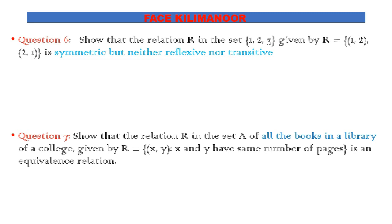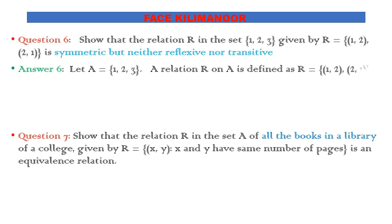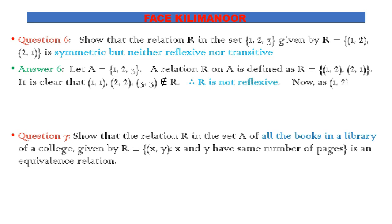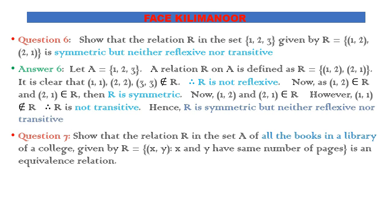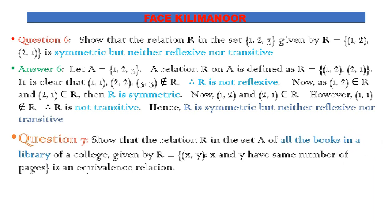Question 6: Show that the relation R in the set {1,2,3} given by R = {(1,2),(2,1)} is symmetric but neither reflexive nor transitive. Let A = {1,2,3}. The relation R = {(1,2),(2,1)}. Since (1,1) is not in R, the relation is not reflexive. Since (1,2) and (2,1) both exist, R is symmetric. Since (1,2) and (2,1) exist but (1,1) is not in R, R is not transitive. Hence R is symmetric but neither reflexive nor transitive.